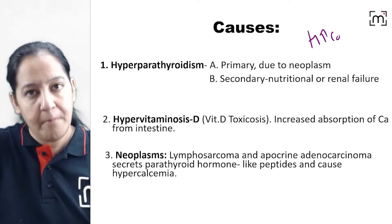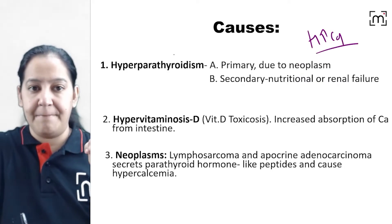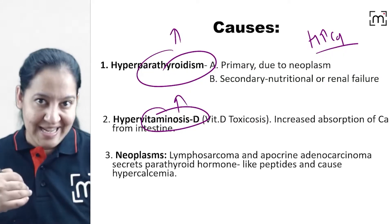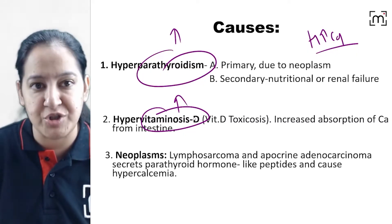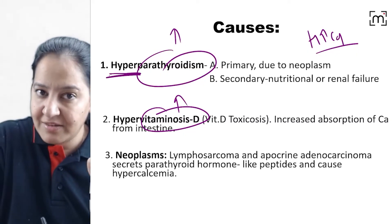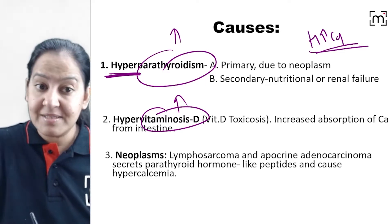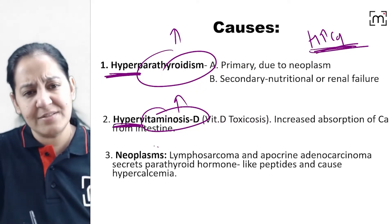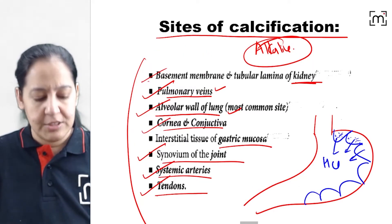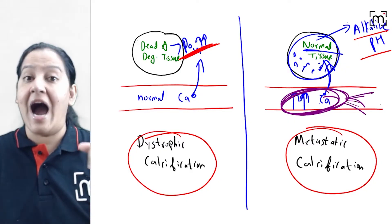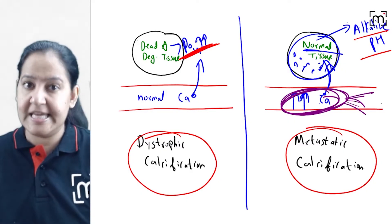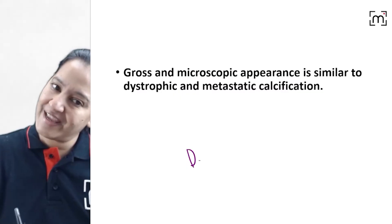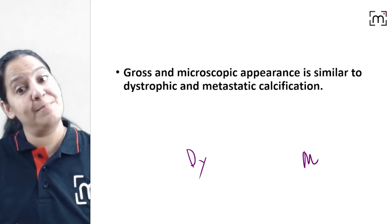The causes of hypercalcemia depend on two things: parathyroid hormone and vitamin D. Both help in calcium absorption. If the person has hyperparathyroidism, calcium in the blood will be more. If the person has hypervitaminosis D, they will also have hypercalcemia. Certain neoplasms can also cause hypercalcemia. So the three causes of hypercalcemia are: hyperparathyroidism, hypervitaminosis D, and certain neoplasms.